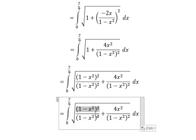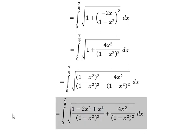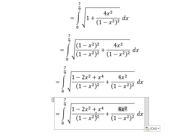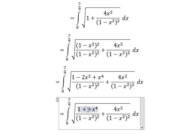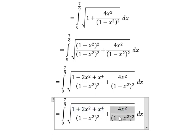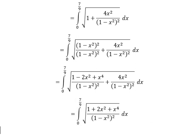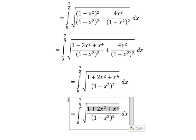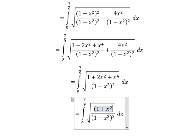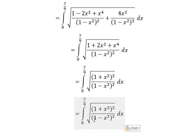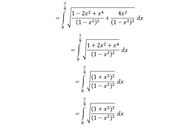Now we can do a common denominator, and we need to expand this. For 4x² minus 2x² we have positive 2x². This relates to identities. Now we have the square root and the power of two, and we can see that from 0 to 7/9, (1 - x²) is still positive.